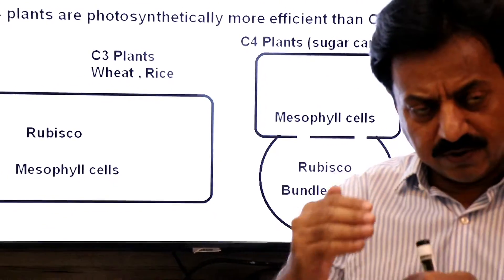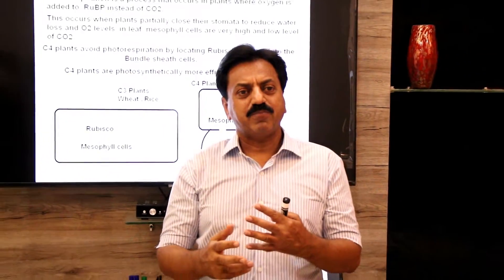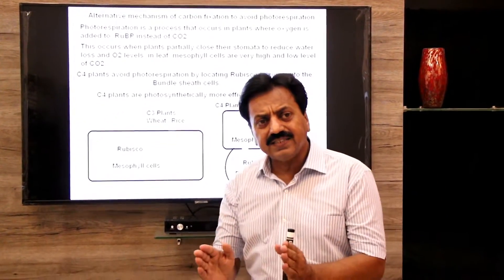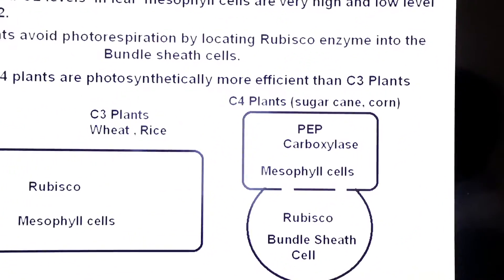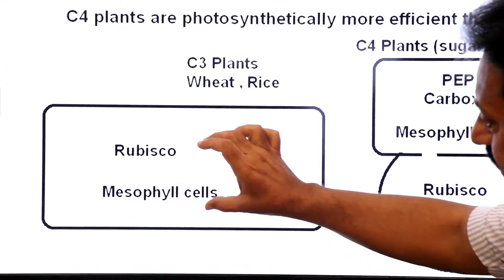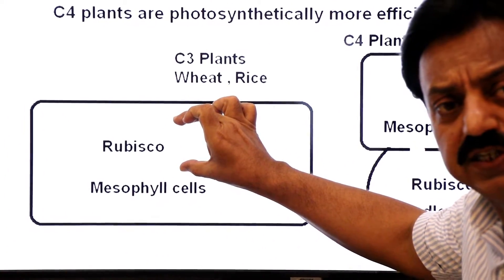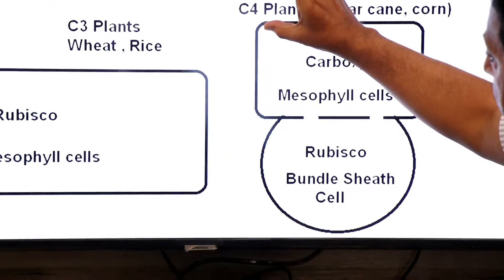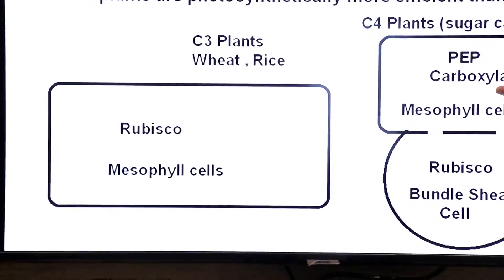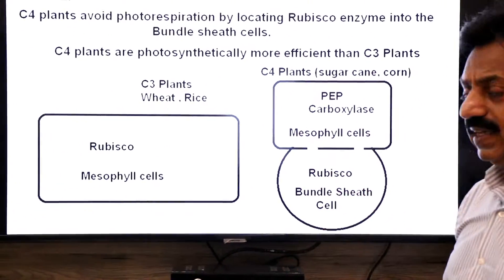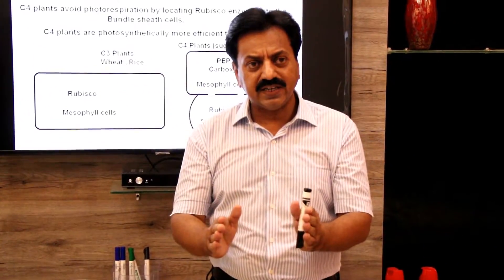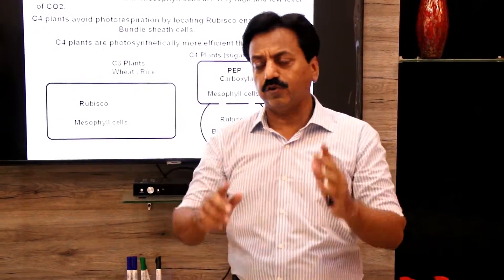Here C4 plants have an advantage in their leaf anatomy. They have placed a different enzyme — PEP carboxylase — in the mesophyll cells. In C3 plants, the Rubisco enzyme is found in mesophyll cells for carbon fixation. So the initial enzyme for carboxylation is different in C3 plants and C4 plants.